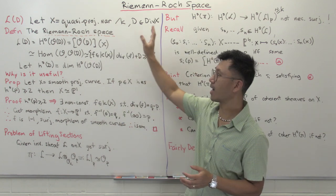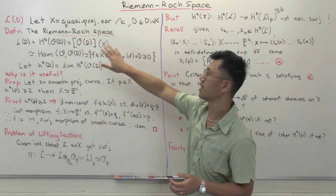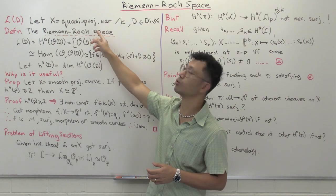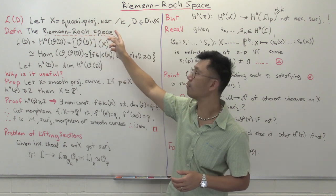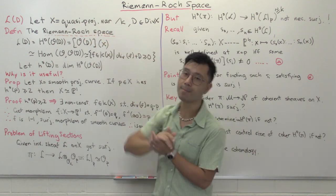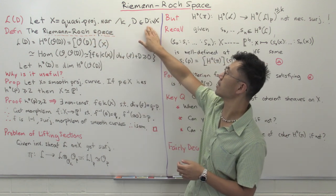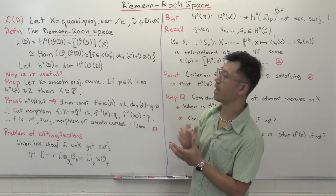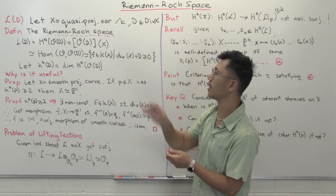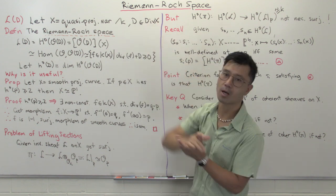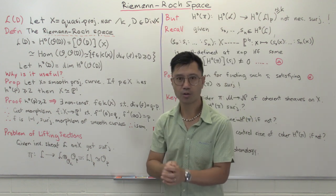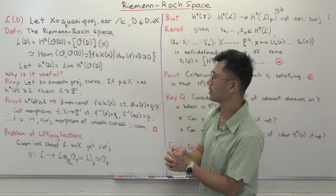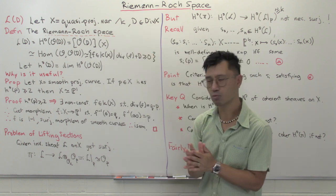So what's our starting data? We're going to start here with X, some sort of quasi-projective variety over field K, and D is going to be some divisor on X — just a linear combination of codimension-one sub-varieties. So what's the Riemann-Roch space?